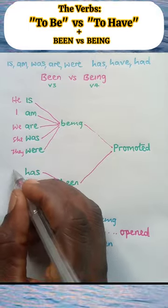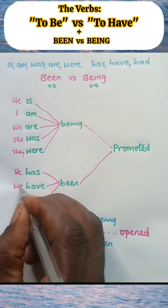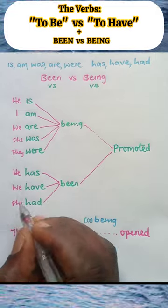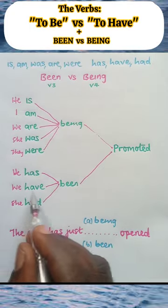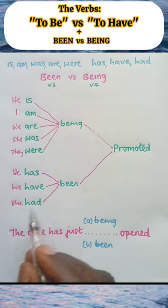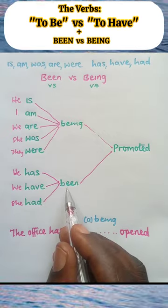Now let's come here. We have: he has, we have, she had. He has been promoted, we have been promoted, she had been promoted.